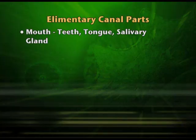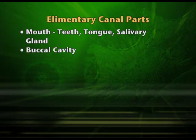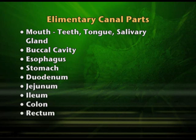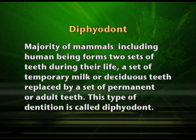To summarize the parts of the alimentary canal in order: mouth (with teeth, tongue, and salivary glands), then buccal cavity, esophagus, stomach, duodenum, jejunum, ileum, colon, rectum, and anus.